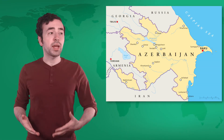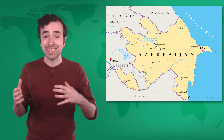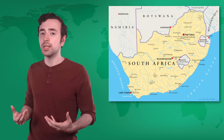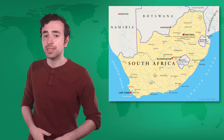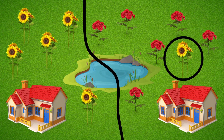Exclaves develop when a nation has political, cultural, or economic needs in a region that is separate from its main territory. Enclaves develop when a region has unique needs that are different from the surrounding state, leading to it wanting sovereignty. With those borders, we'll both have access to the pond and all of our own flowers — we may have settled this conflict!